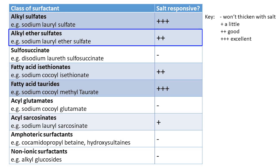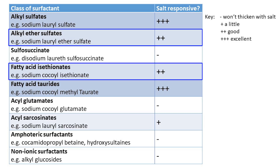Alcohol ether sulfates, such as sodium lauryl ether sulfate, and fatty acid isethionates, such as sodium cocoyl isethionate, have a moderate response to salt. They will thicken with the addition of salt, but you won't get the same viscosity build that you would from those that are more salt responsive.